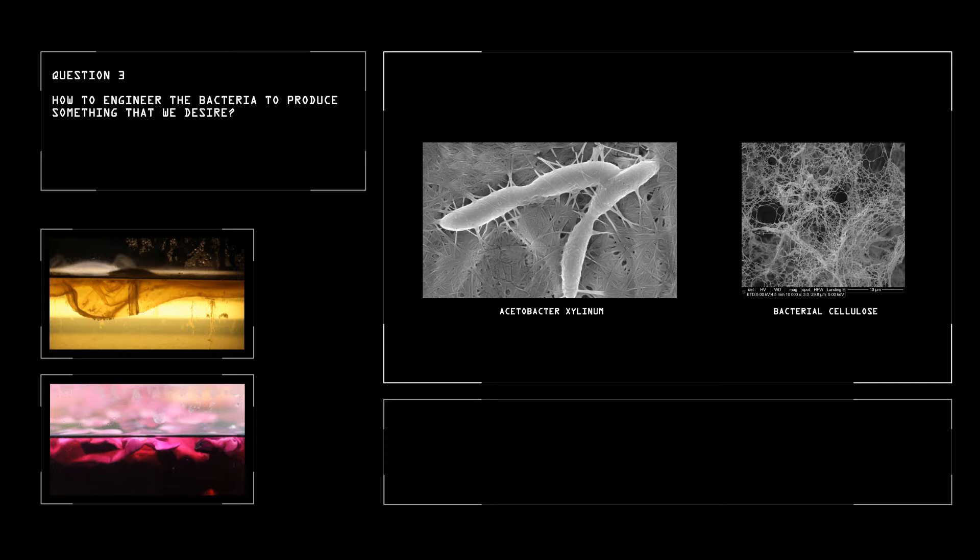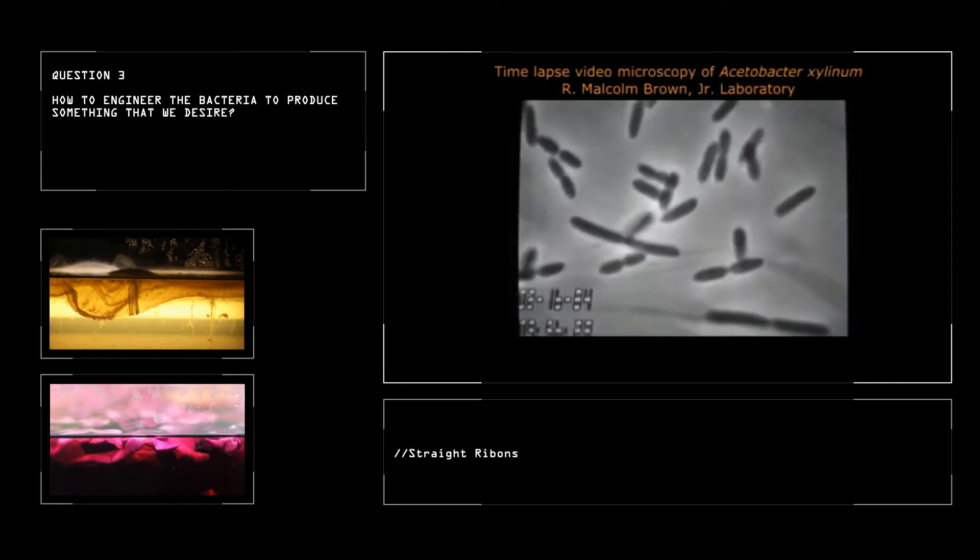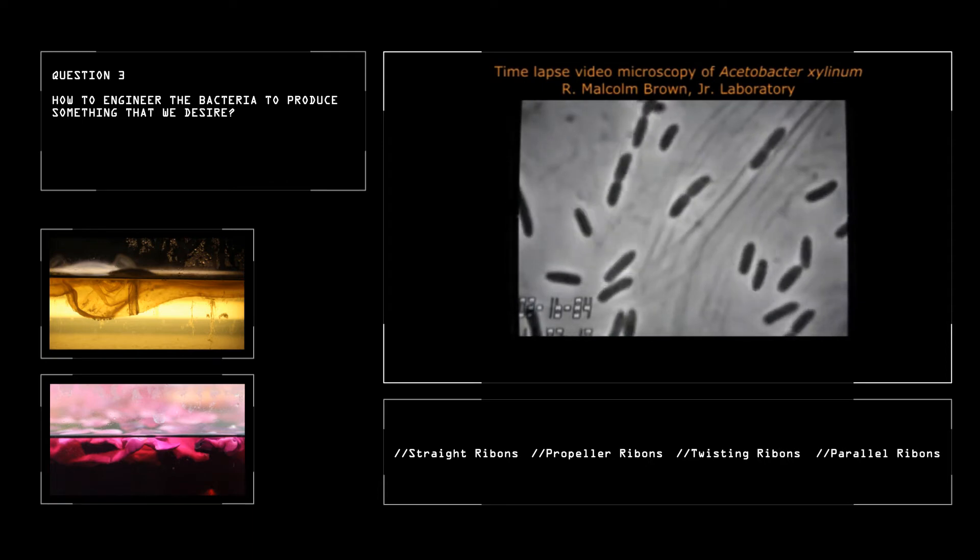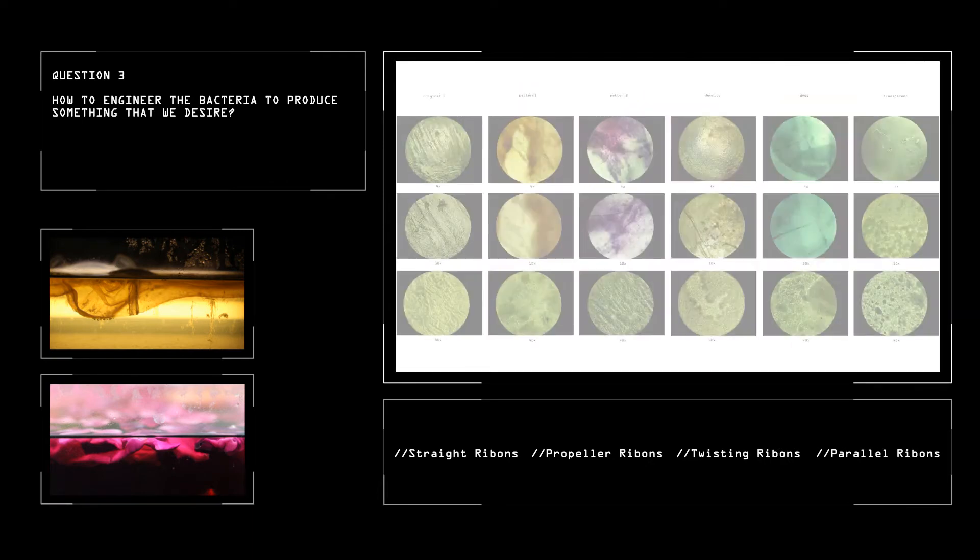This is Acetobacter excelinum, which can create pure cellulose material. The third step is to engineer the bacteria to produce cellulose with different characteristics.